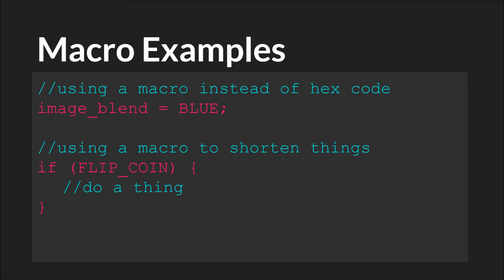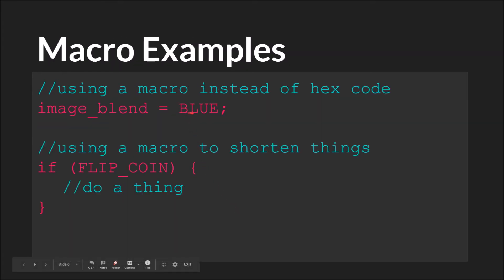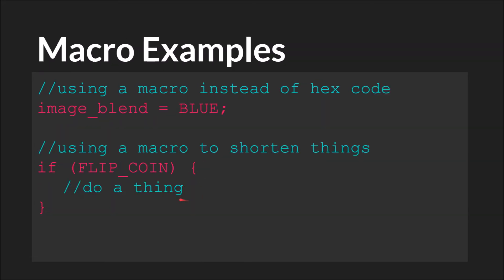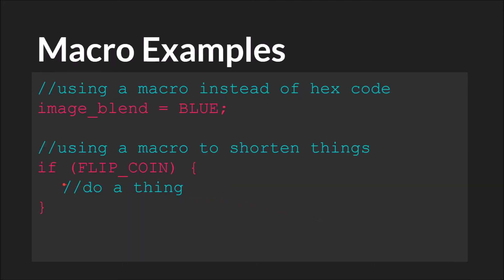Once you've created a macro, you can simply use it. Here we have image_blend equals blue — again, blue is the hex code. So when this code is compiled, this is going to be replaced with this. Or, if flipCoin, do something — where flipCoin will be replaced with choose true or false, making this a statement that just evaluates 50 percent of the time to doing this thing, and 50 percent of the time to not doing that thing.